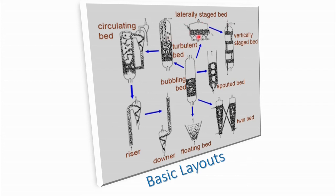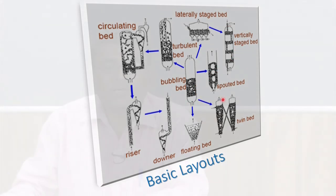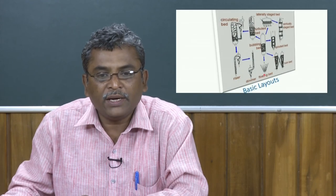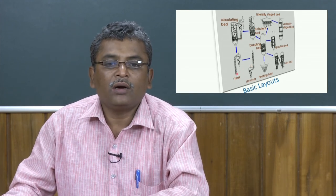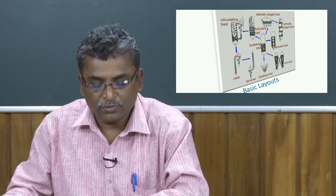A laterally staged bed is another layout where solids are supplied laterally and after drying they come out — the solid particles move laterally compared to the gas or liquid. A vertically staged bed is another important layout where solid particles are loaded from the top and gas is supplied from the bottom in a stage-wise manner. There are also twin-type beds, floating fluidized beds, and provisions like the downcomer for recycling solids and the riser where solid particles are being fluidized.